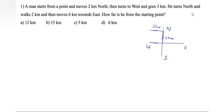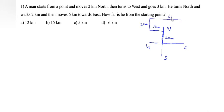He turns north — north direction is this side, so you turn this side — and walks two kilometers. Then moves six kilometers towards east. East is in this side, so moves six kilometers towards east — this side, six kilometers.